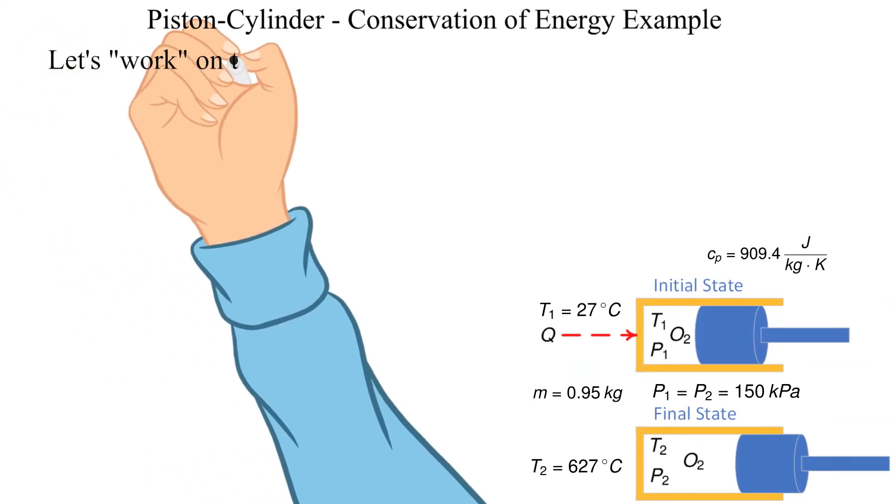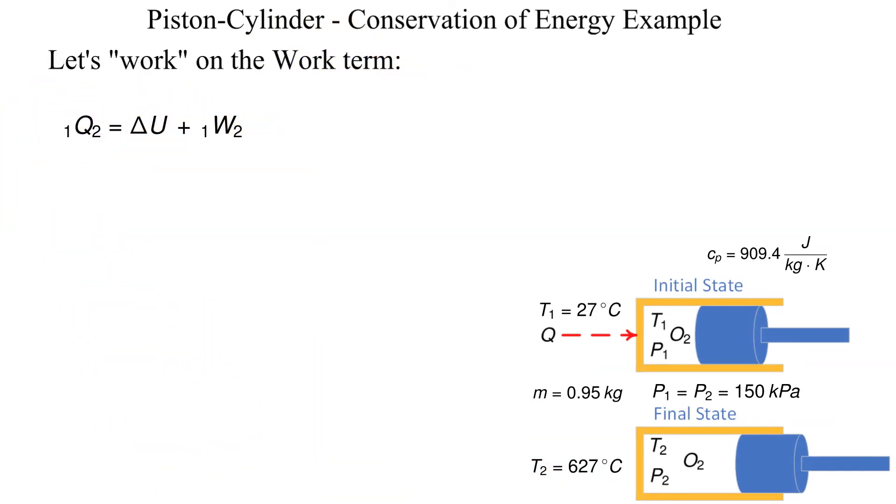Now let's find an expression for the work done by the system. By definition the work is solved by integrating the dot product of force with position. This is shown for the work from state 1 to 2. Notice that we dropped the vector notation since there is only motion in the x direction. We know that force is equal to the pressure times the area of the piston.